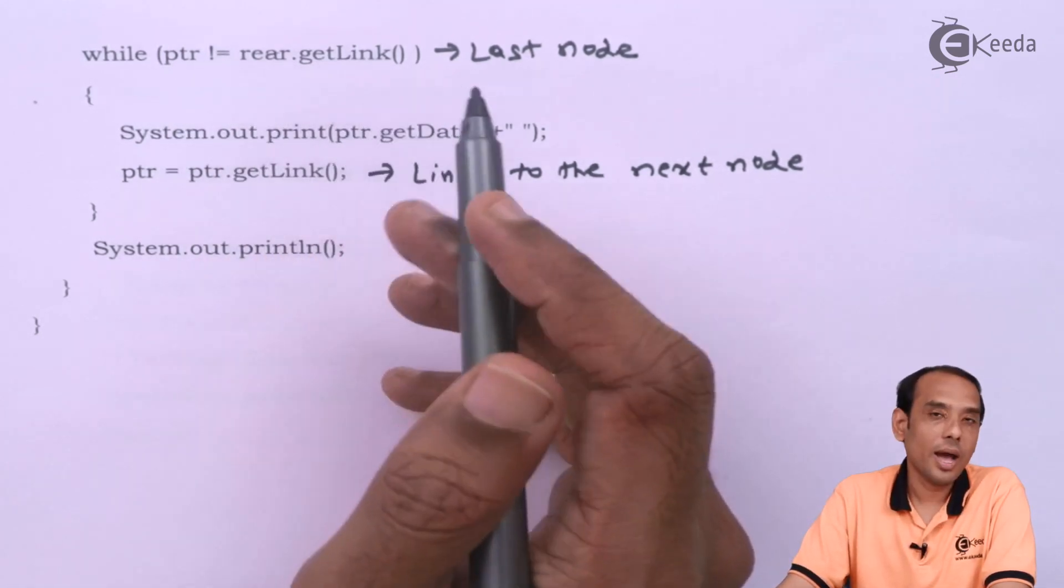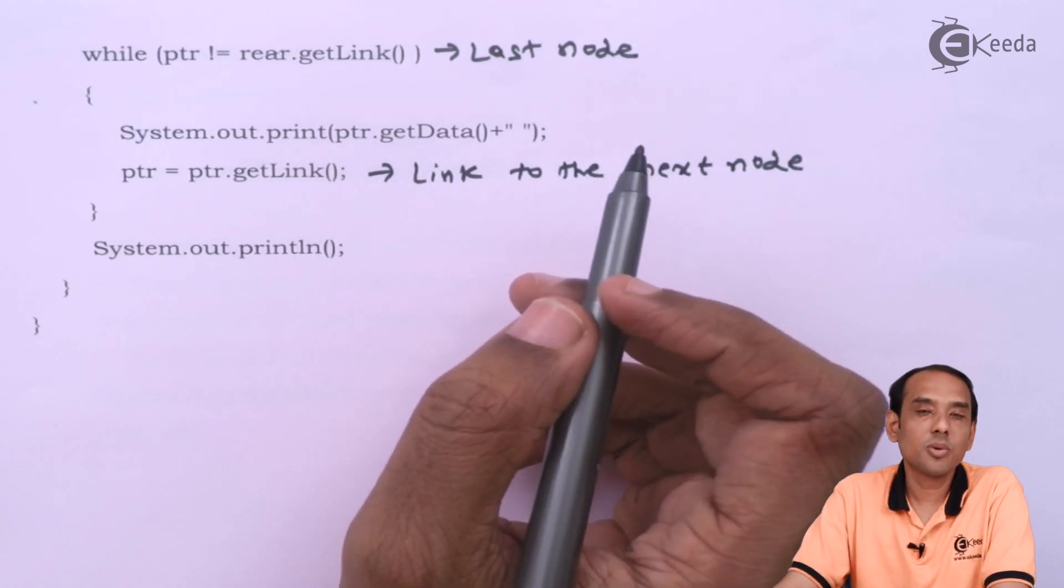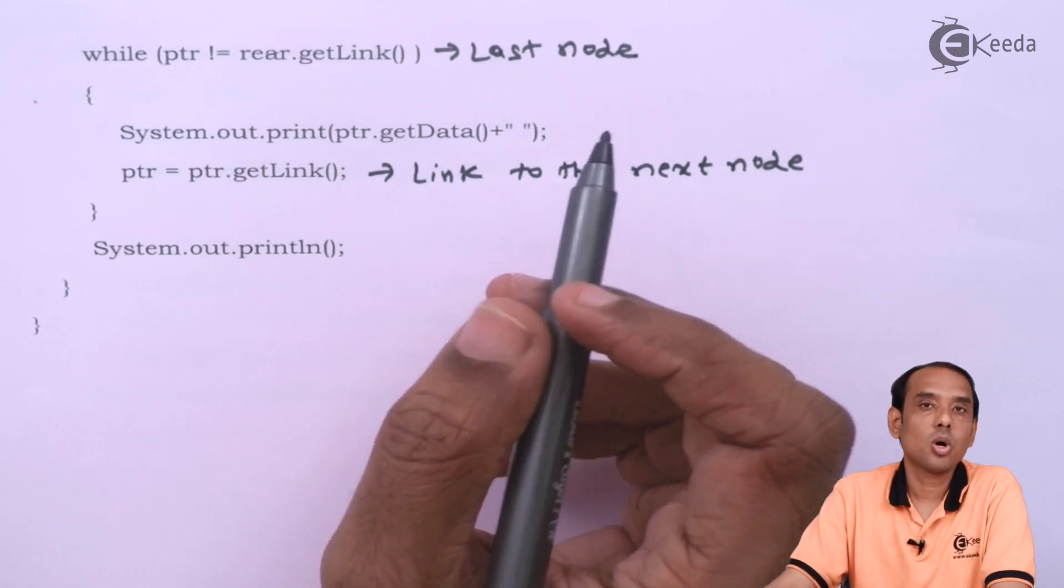When this is done, I can say I have checked through all the values present in the queue. In other words, I can say I have displayed all the values present in the given queue.